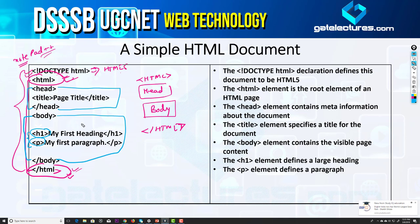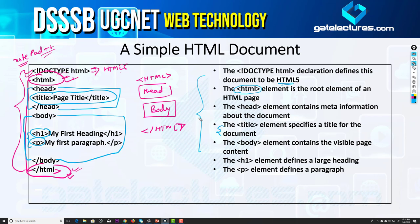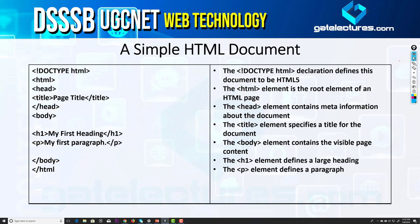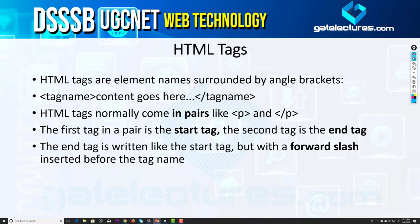The same points are noted here: the DOCTYPE HTML declaration defines the document as an HTML5 document. The HTML element is the root element of the HTML page. The head element contains meta information about the document. The title element specifies a title for the document. The body element contains the visible page content — the elements defined for this HTML page.